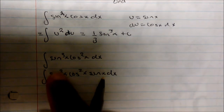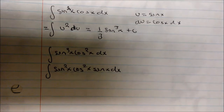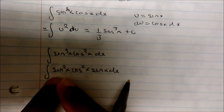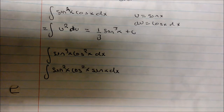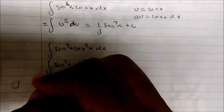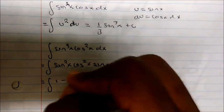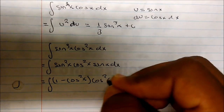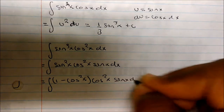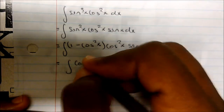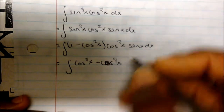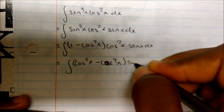Notice I borrowed one of those sine of x's. Now I can use my identity — the identity for sine squared, which is the one I just borrowed from — to get everything else in terms of cosine, which will allow me to use substitution. So this is equal to the integral of one minus cosine squared of x, because that's our identity for sine squared of x, multiplied by cosine squared of x times sine of x dx. This becomes the integral of cosine squared of x minus cosine to the fourth of x.